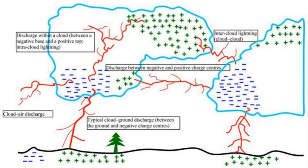The negative charges repel electrons on the ground beneath them, so the ground below the clouds becomes positively charged. At first, the atmosphere prevents the electrons from flowing away from areas of negative charge toward areas of positive charge. As more charges build up, however, the air between the oppositely charged areas also becomes charged. When this happens, static electricity is discharged as bolts of lightning.